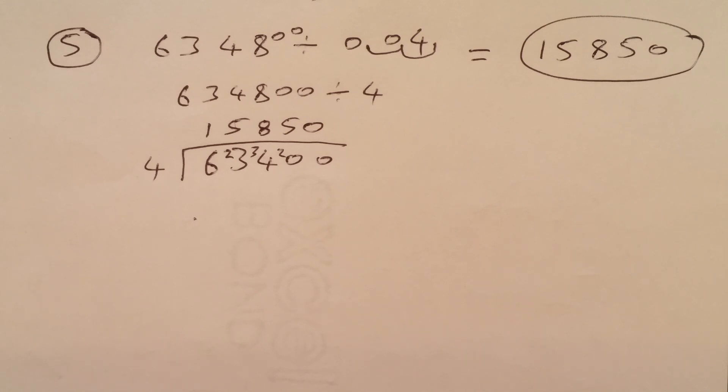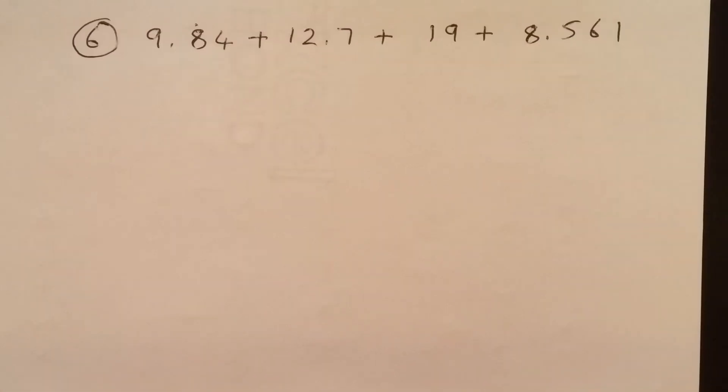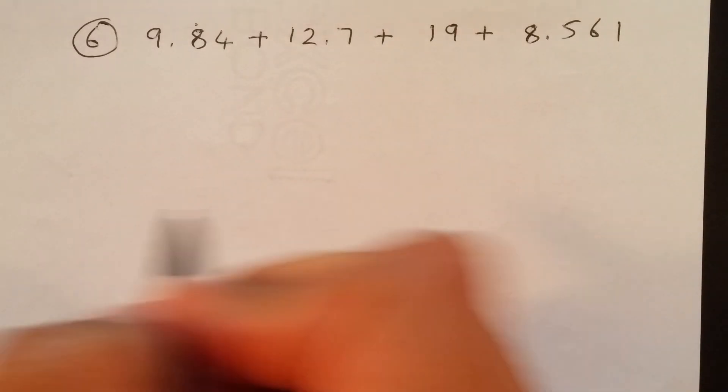Easy method. Practice it with different questions. Check your answers if you're using a calculator. I'm sure you guys will get it. Any doubt, put in our comments below. Let's move on to the next one. Right. This is an addition question. So, it's 9.84 plus 12.7 plus 19 plus 8.56.